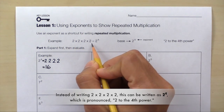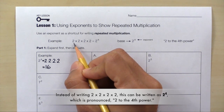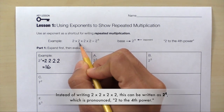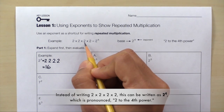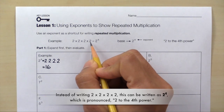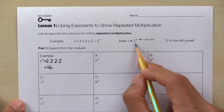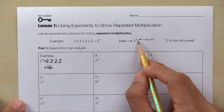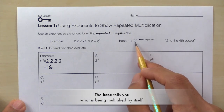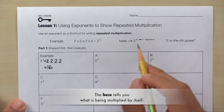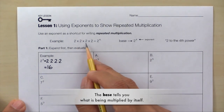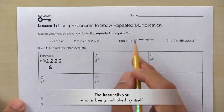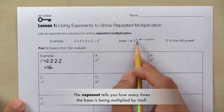Since this is repeated multiplication, here's 2 to the first power, 2 to the second power, 2 to the third power, 2 to the fourth power. Take a look to the right — notice that we have 2 to the fourth power written down. The 2 is the base, and the base tells you what is being multiplied by itself. The 4 is the exponent, and it tells you how many times the base is being multiplied by itself.